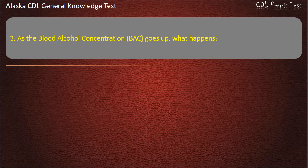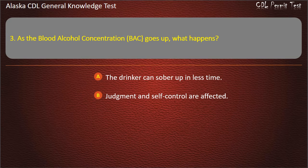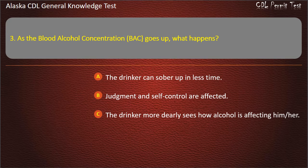Question 3. As the blood alcohol concentration goes up, what happens? The drinker can sober up in less time; judgment and self-control are affected; or the drinker more clearly sees how alcohol is affecting him or her. Answer: Judgment and self-control are affected.